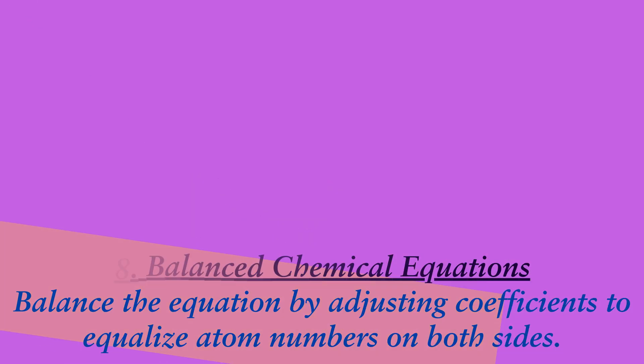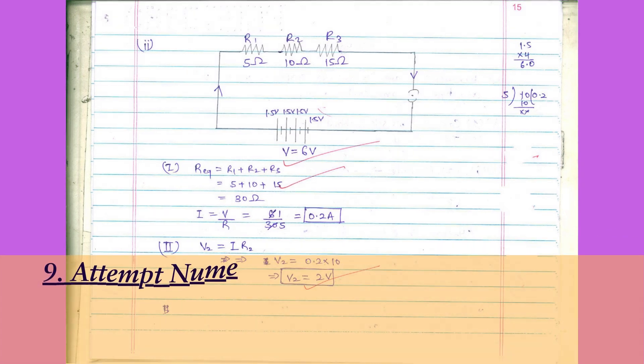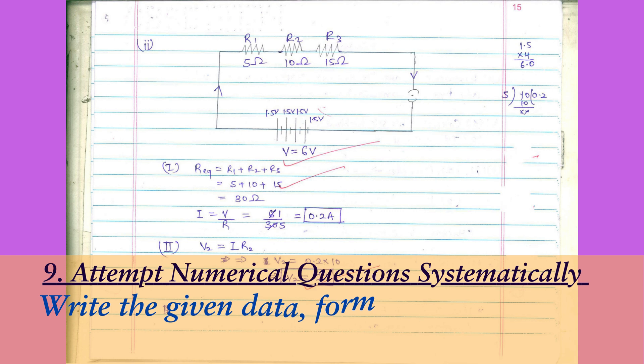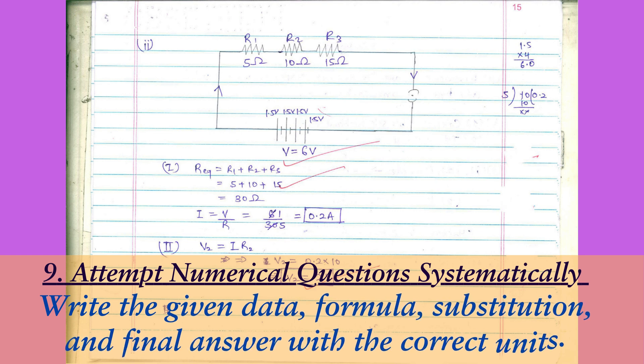Ninth point: Attempt numerical questions systematically. For physics or chemistry numericals, follow a systematic approach. Write down the given data, mention the formula you will use, show the substitution, and solve step by step. Don't forget the final answer with the correct units.